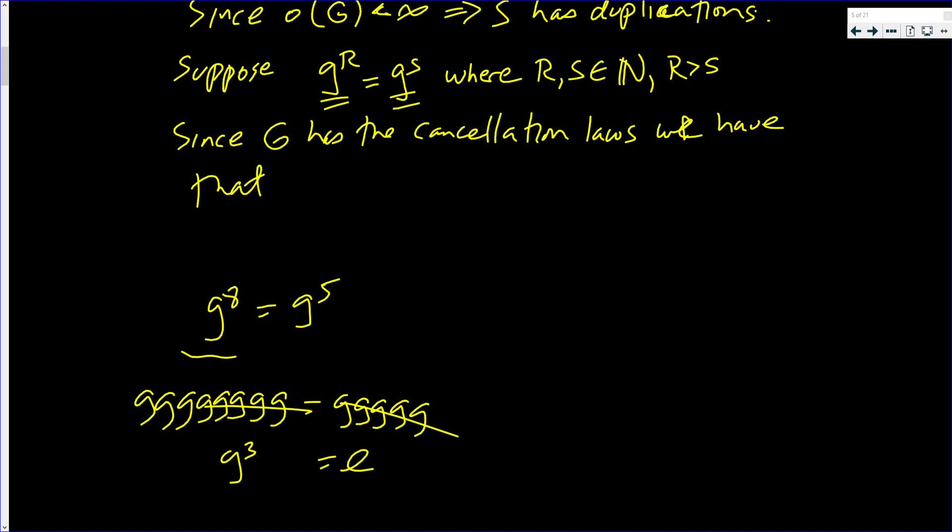We have that g to the R minus S, this 3 came from 8 minus 5. 8 minus 5 is equal to e, which is in G. Since big G is closed.